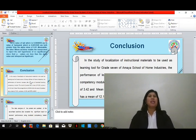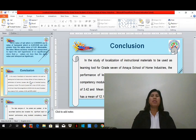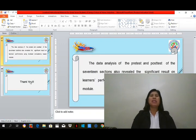For the conclusion, in the study of localization of instructional materials to be used as learning tool for grade 7 of Amaya School of Home Industries, the performance of learners increased after the use of localized learning competency module. The result of pre-test has a mean of 10, variance of 3.42, and mean percentage score is 66.46, while the result of post-test has a mean of 12.15, variance of 3.94, and MPS is 80.97. The data analysis of the pre-test and post-test of the 17 sections also revealed the significant result on learners' performance using localized competency-based module.